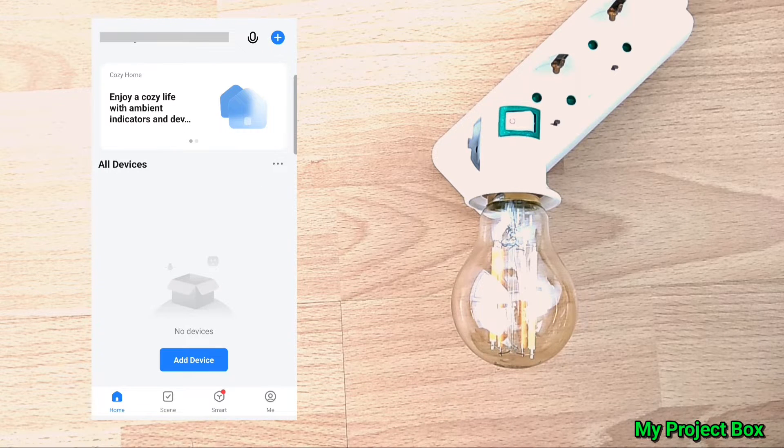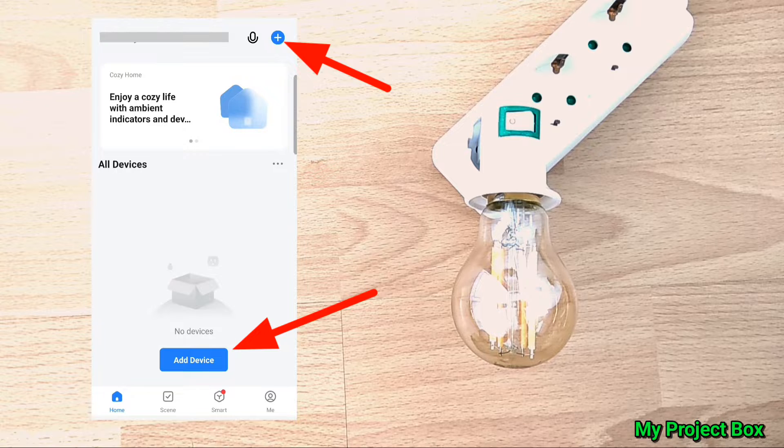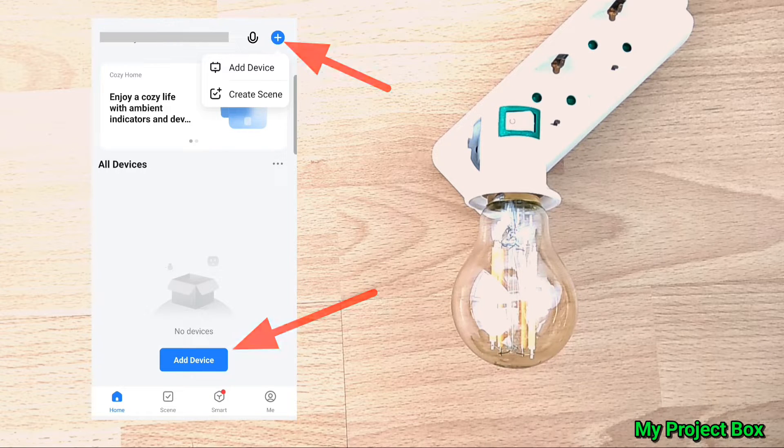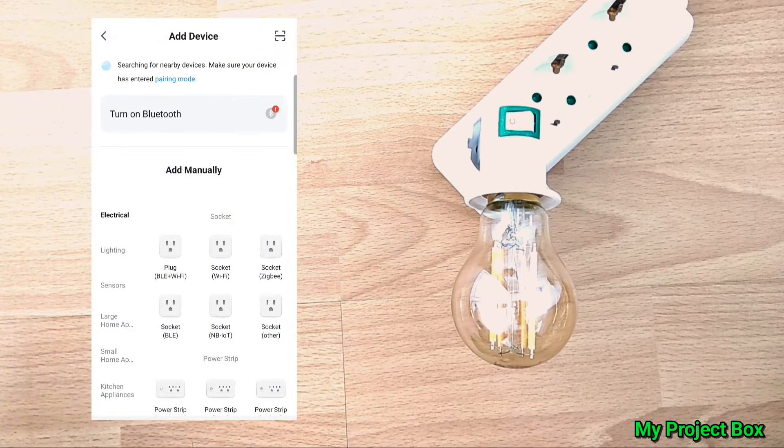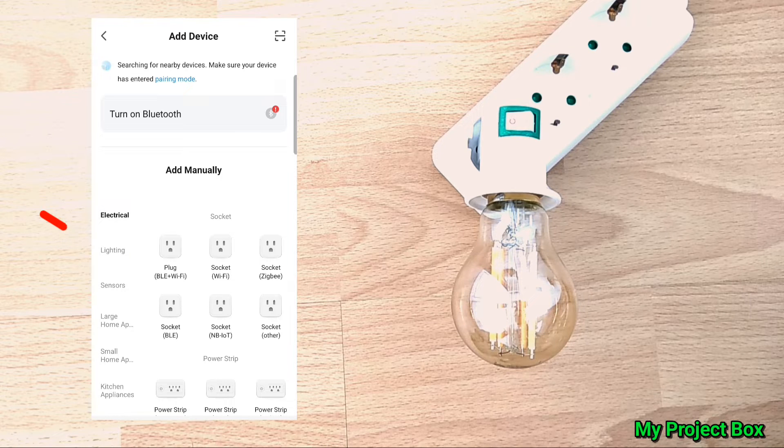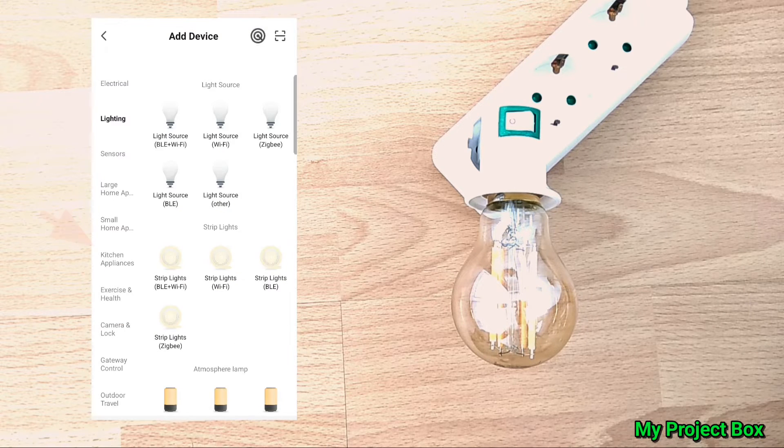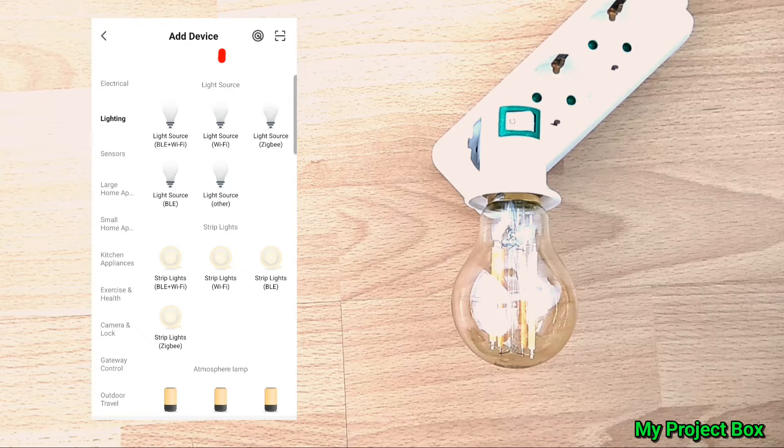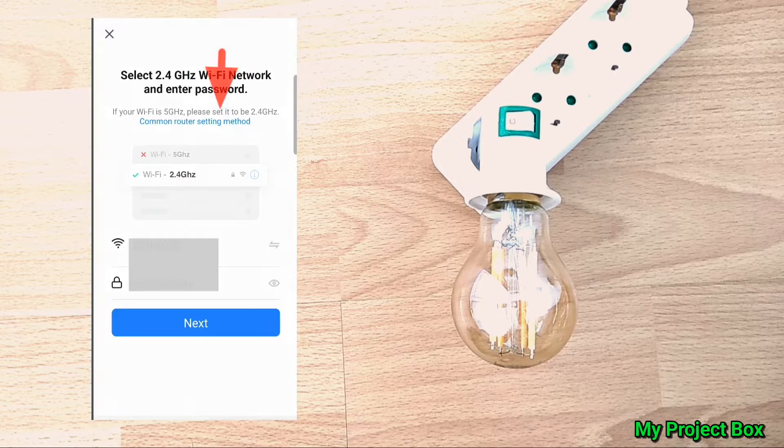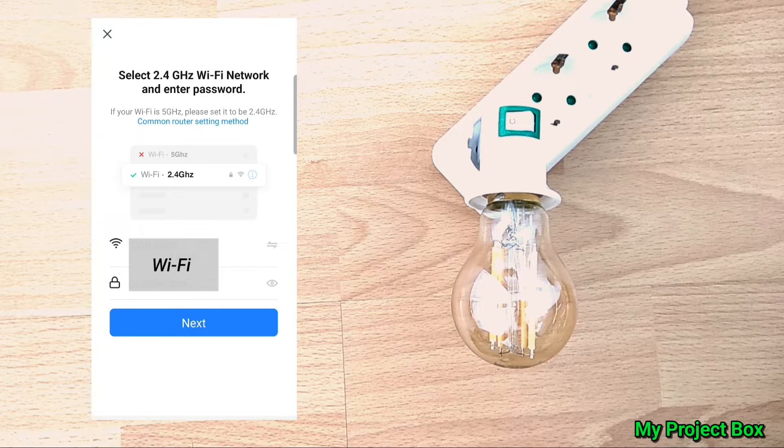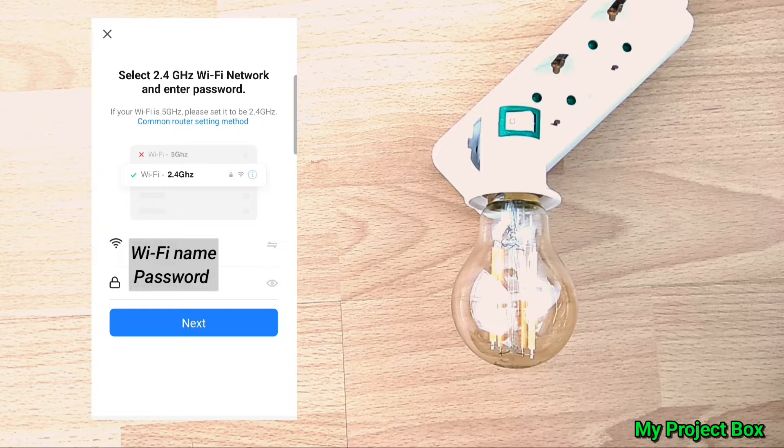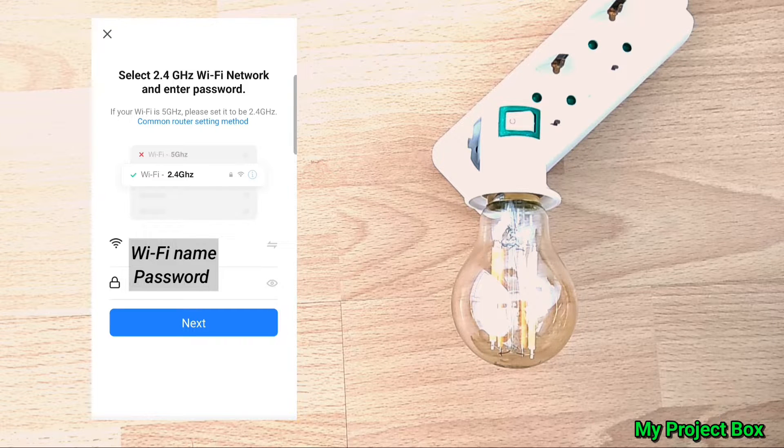So then you can either use the plus button or add device. And then we go to lighting and light source Wi-Fi. Then we add the Wi-Fi password and click next.